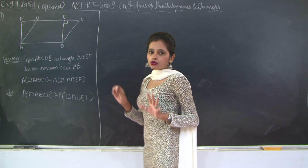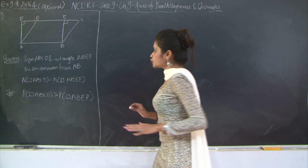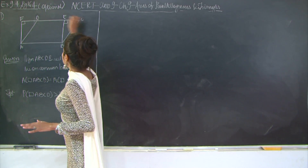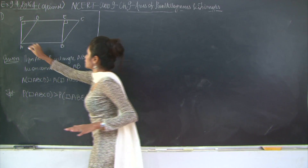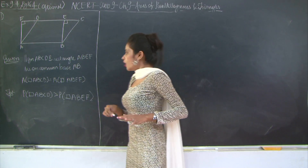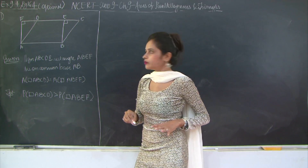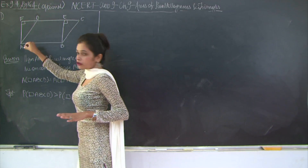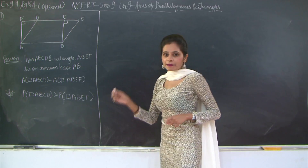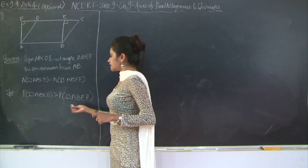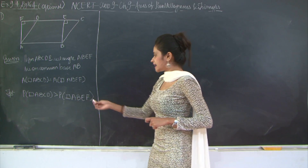Here the first question: we've been given two quadrilaterals, one of which is a parallelogram and one is a rectangle, on the same base AB. So you have parallelogram ABCD and rectangle ABEF. They are sharing the common base AB. It is given that the areas of the two — the parallelogram and the rectangle — are equal. I need to prove that the perimeter of parallelogram ABCD is greater than the perimeter of rectangle ABEF.